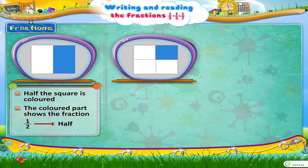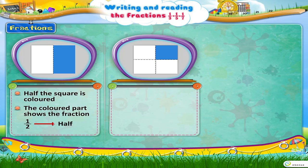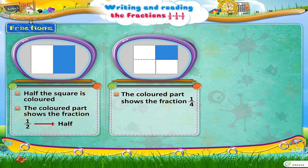This figure is divided into four equal parts, out of which one part is coloured. So the coloured part shows the fraction 1 upon 4, or 1 fourth, or a quarter.